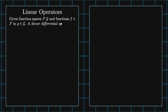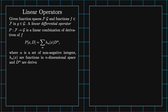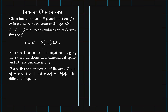Given the function spaces F and G and functions F in F and G in G, then a linear differential operator P, which is a map from F to G, is a linear combination of derivatives of F, such that P of X and D equals the sum on alpha of H sub alpha of X, D to the alpha. Where alpha is a set of non-negative integers, H sub alpha of X are functions in n-dimensional space, and D to the alpha are generalized derivatives of F. P satisfies the properties of linearity: P of U plus V equals P of U plus P of V, and P of A times U equals A times P of U.